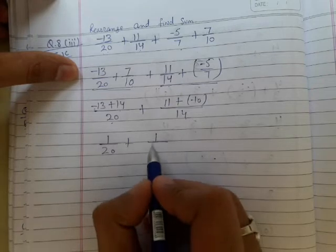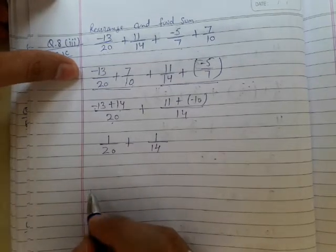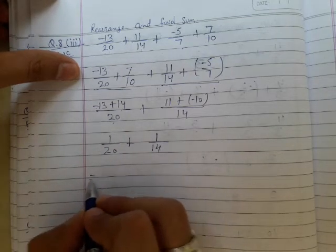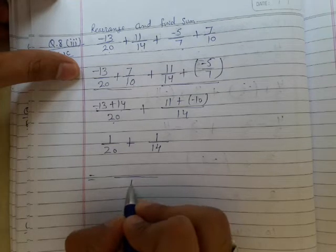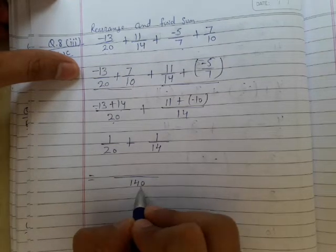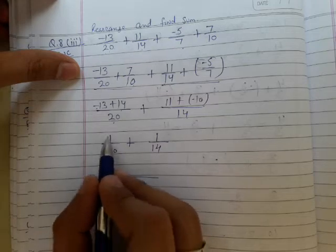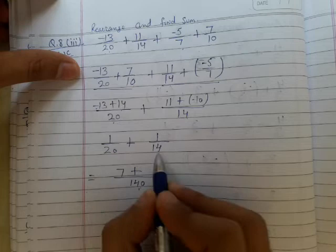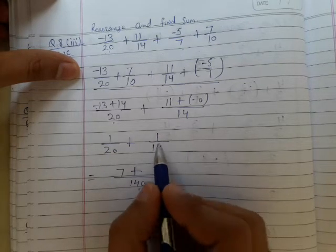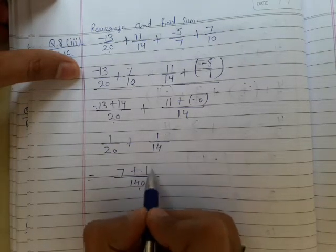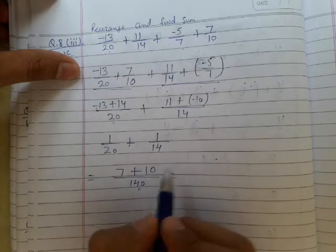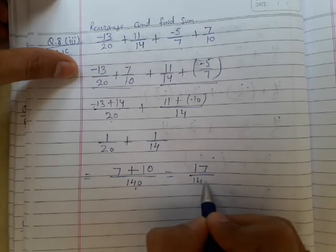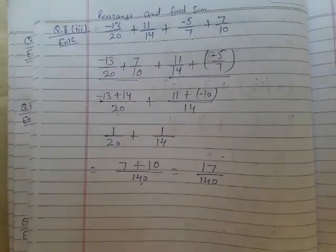Now we add 1/20 plus 1/14. The LCM of 14 and 20 is 140. 140 divided by 20 equals 7, times 1 equals 7. Plus 140 divided by 14 equals 10, times 1 equals 10. Adding the numerators: 7 plus 10 equals 17, giving us 17/140. This is the answer to part 3 of question number 8.